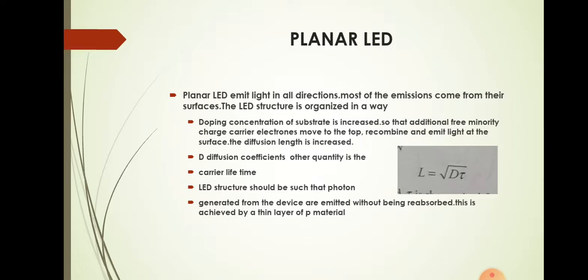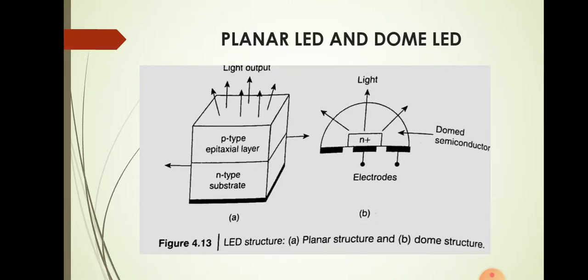In order to increase recombination at the surface of the LED, we can adopt two methods. We can increase the doping concentration of the substrate so that additional minority carriers or electrons move to the top and recombine with the holes there to emit light. The second method is to increase the diffusion length, where diffusion length L equals the square root of D times t, where D is the diffusion coefficient and t is the carrier lifetime.